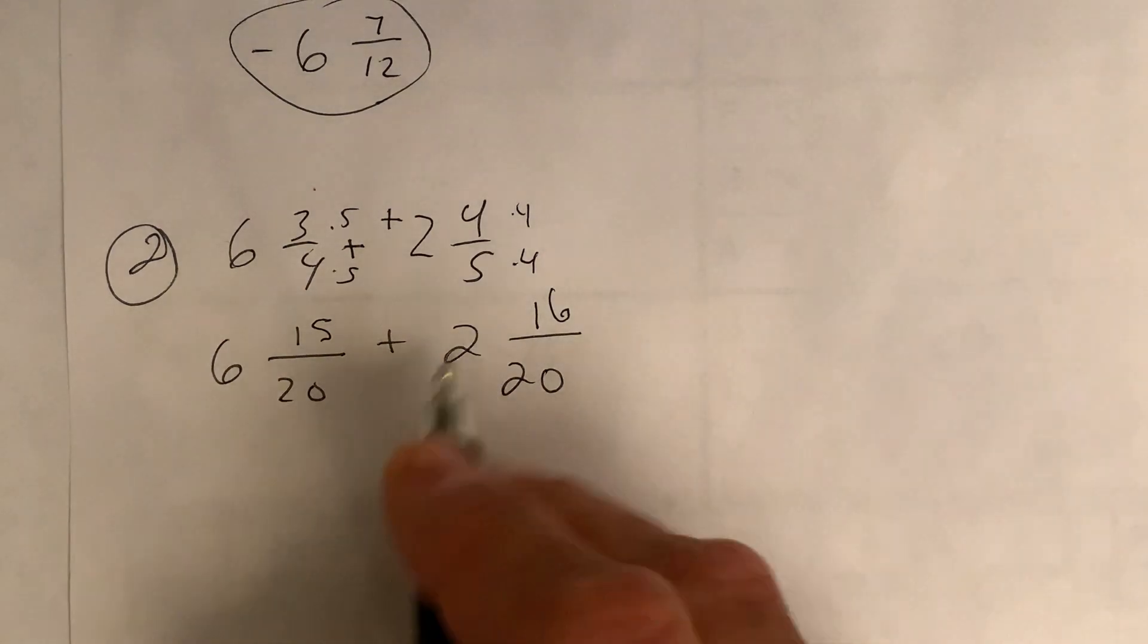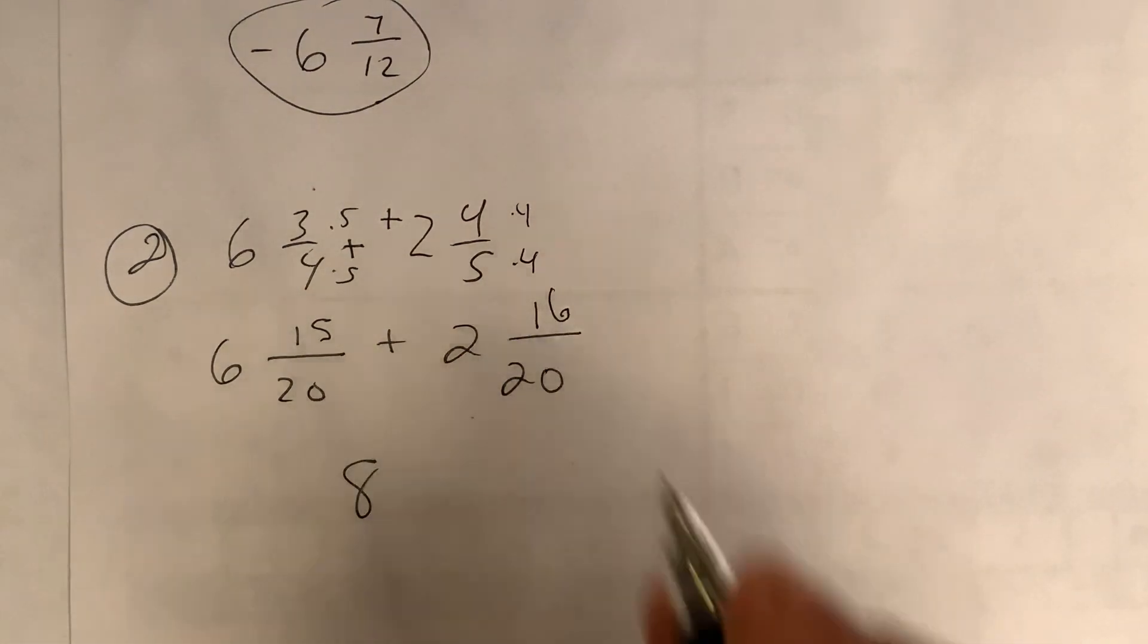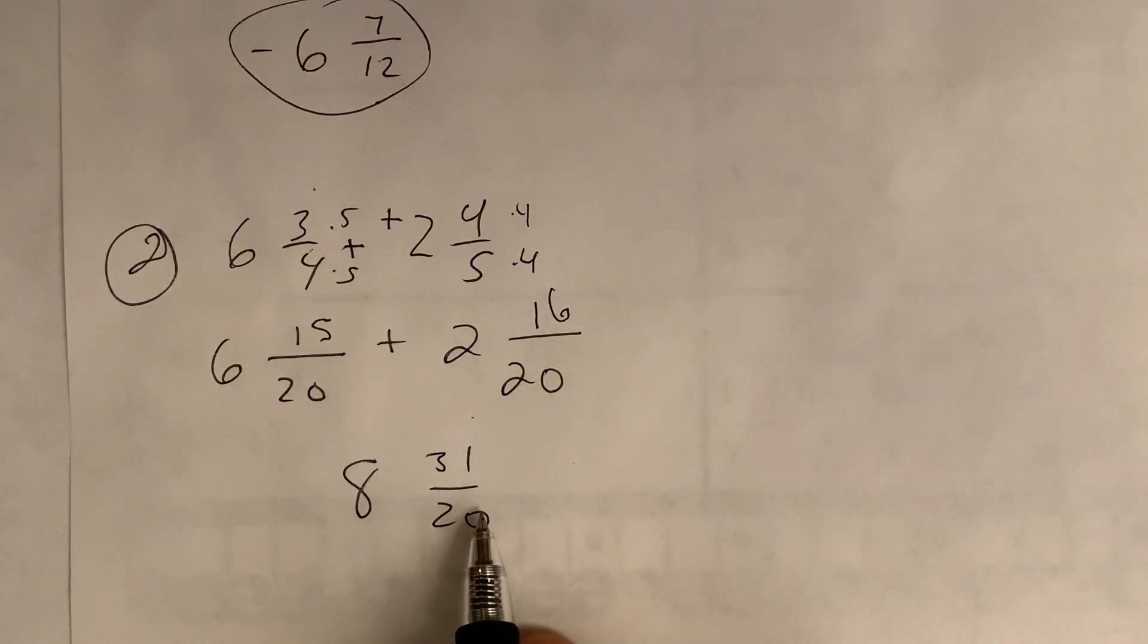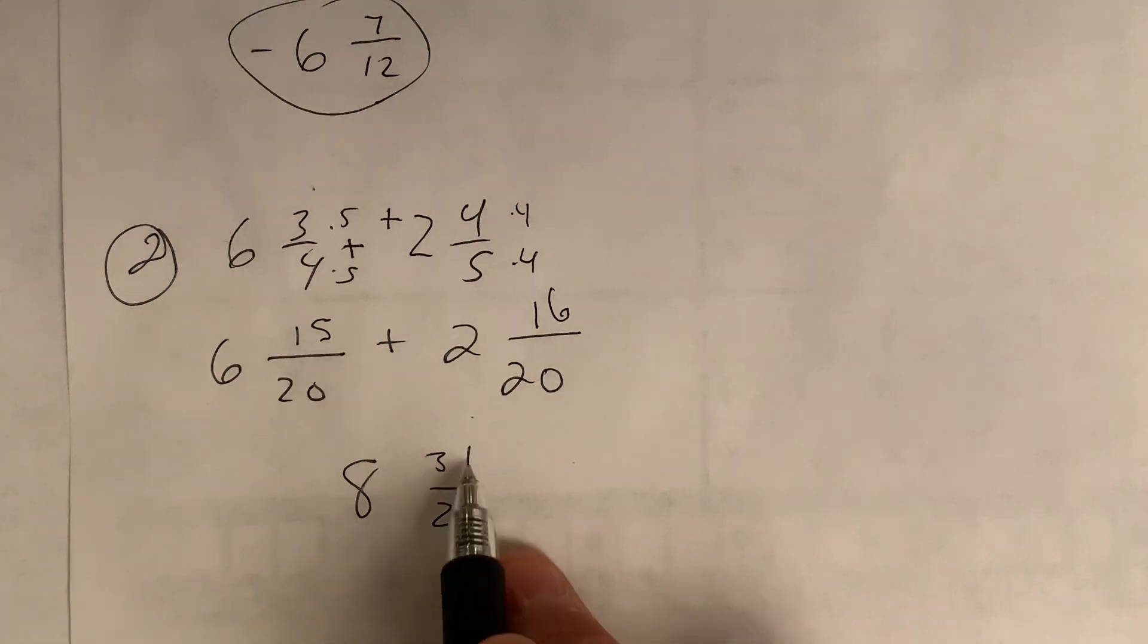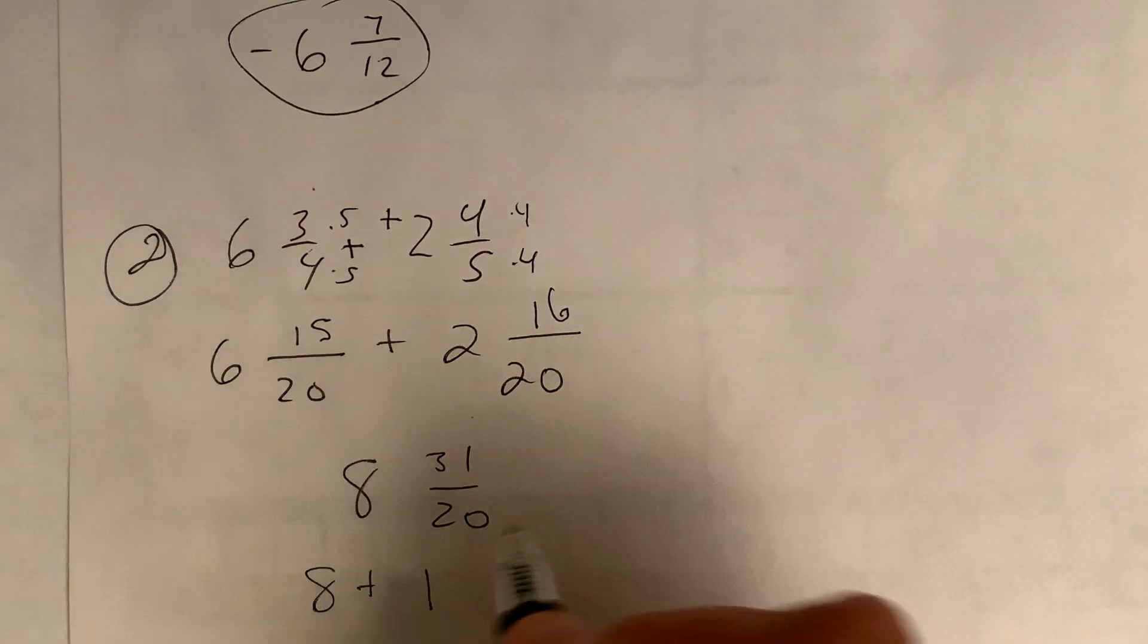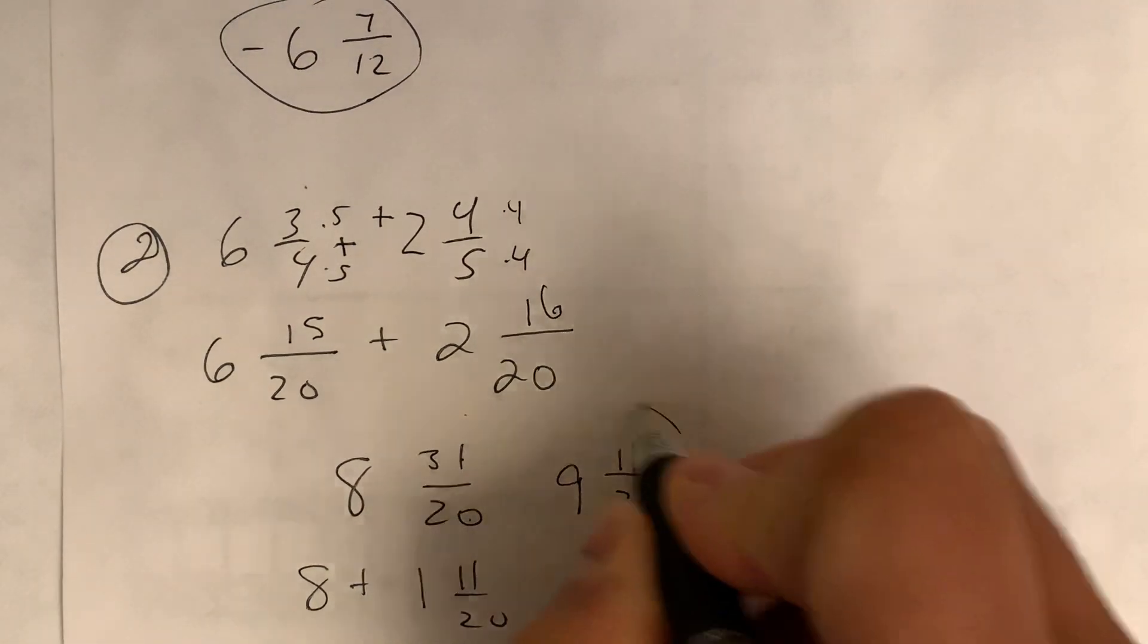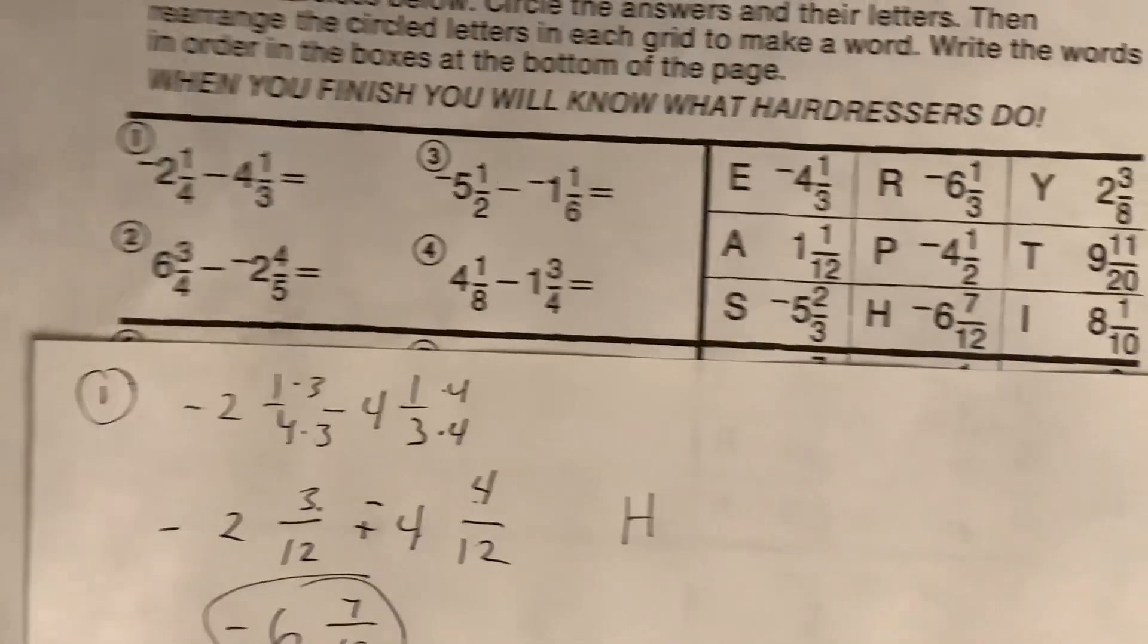So now we're going to add them. Six plus two is eight. 15 plus 16 is 31 twentieths. This of course is not simplified. I'm assuming our answer is not going to work like that. You're not going to have an answer like this. So we're going to have to take this and make this divided. So 20 goes into 31 one time. So this is eight plus one. And 31 minus 20 is how much? That's right. 11. 11 twentieths. I'll add them together. And that gives us nine and 11 twentieths, which again, I hope is up there. Check your answers here. Yes, it is. It's T. So it's T.